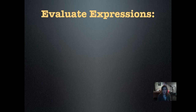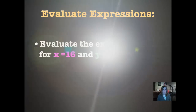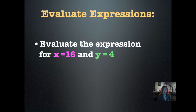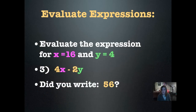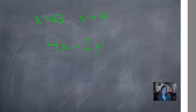Now we're going to do some practice evaluating expressions. This is a slightly different type of algebra, but it'll all fit together in the end. For this one, we're going to use x equals 16 and y equals 4. That means we're going to substitute that number for the variable when we see it. Here it is — number 3: 4x minus 2y. Go ahead and substitute those numbers for the variable, then push play when you're ready. Did you write 56?